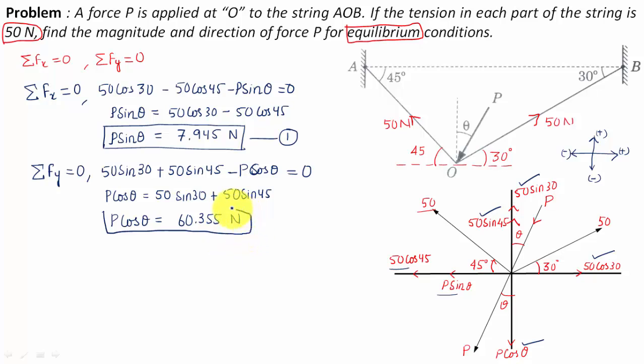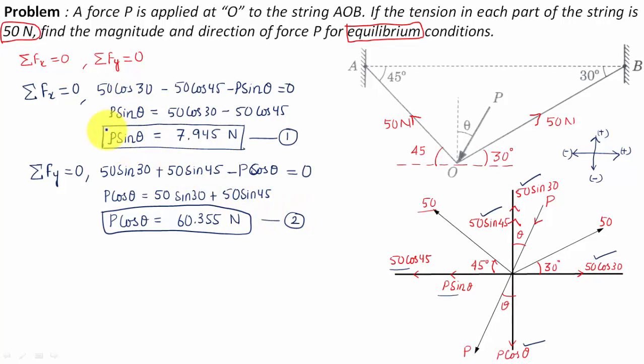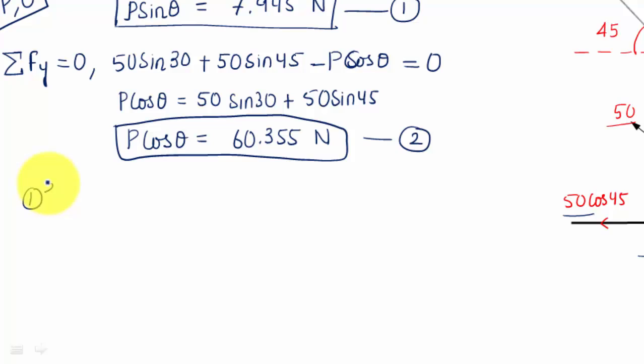You have two equations and two unknowns - P and theta. These are to be calculated. We're going to square equation number one and add it with the square of equation number two.